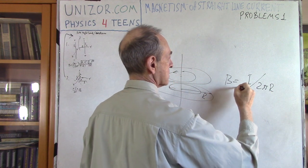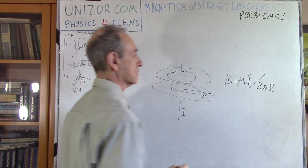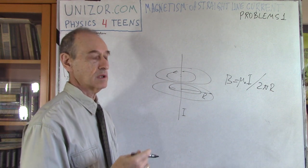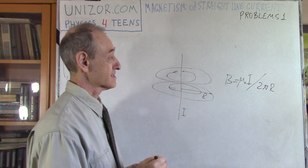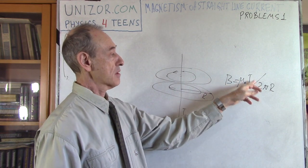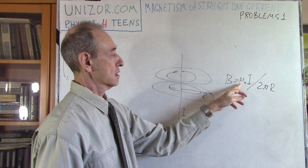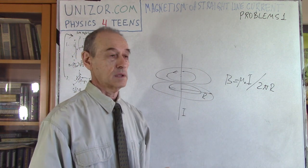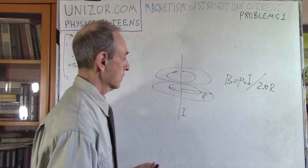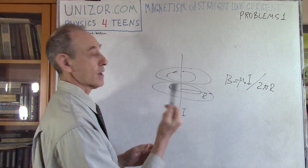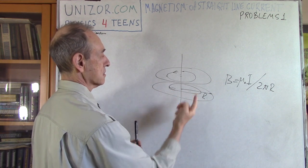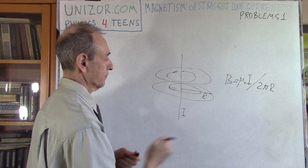There is a coefficient mu zero, called space permeability, which connects the units of measurement — tesla, amperes, meters — so that's how mu zero has a certain value. Now one more thing about direction: since magnetic lines are circular, if you put a compass anywhere it will point tangentially to the magnetic line.